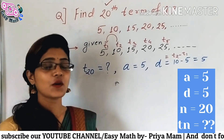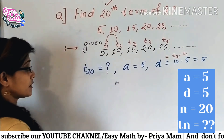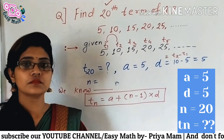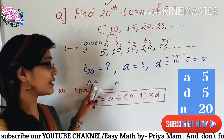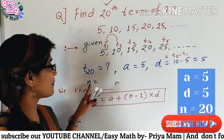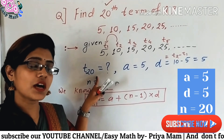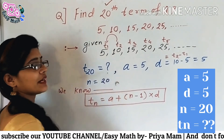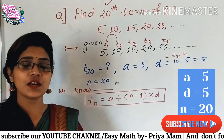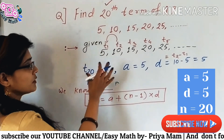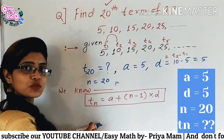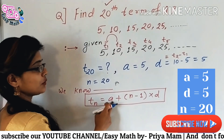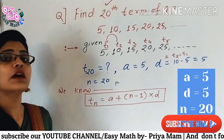Okay, now N. N is equal to — N means इस sequence में कितने numbers हैं. 20th term आपको find करना है, that means इसमें 20 numbers हैं, total numbers are 20. तो, you have to put all these values into the formula. मैंने formula लिख दिया है.